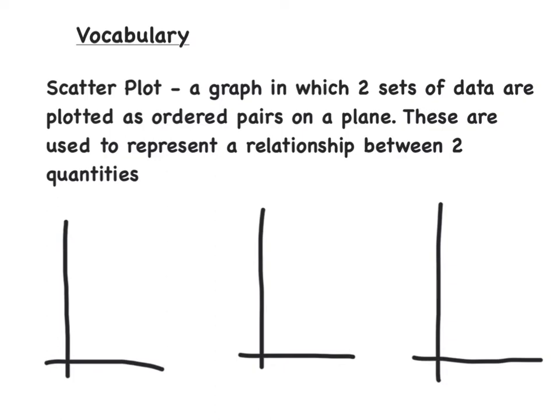These are used to represent a relationship between two quantities. There are three types of scatter plots: either a positive correlation, a negative correlation, or there is no correlation.